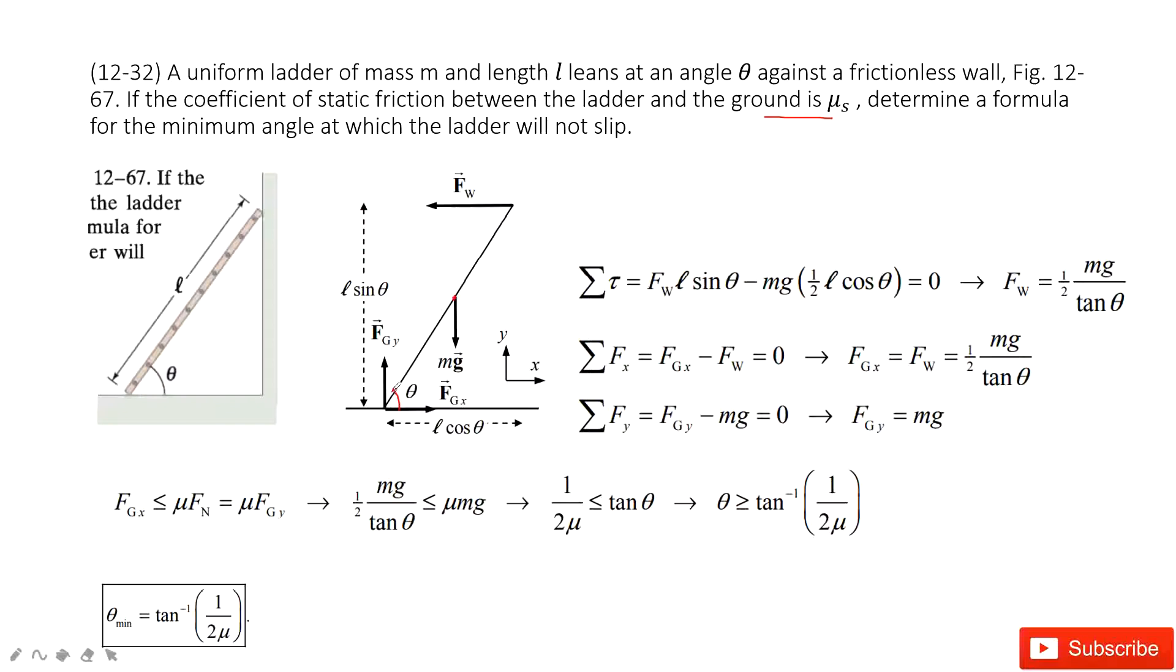If we want to make sure it's static balanced, we must make sure this F_gx, because only this point connected with the ground, is not larger than static friction force. And then the static friction force is mu times the normal force.